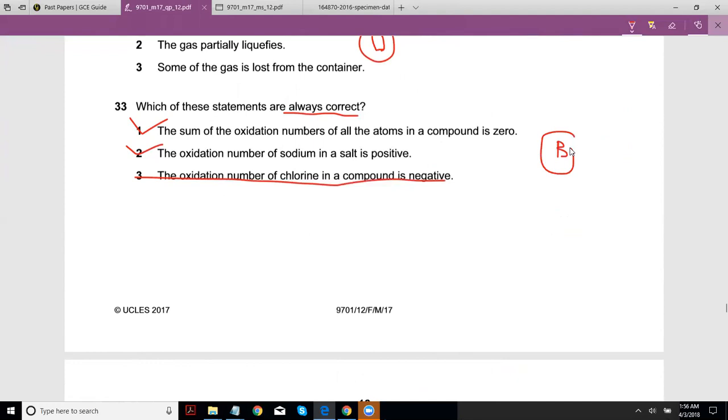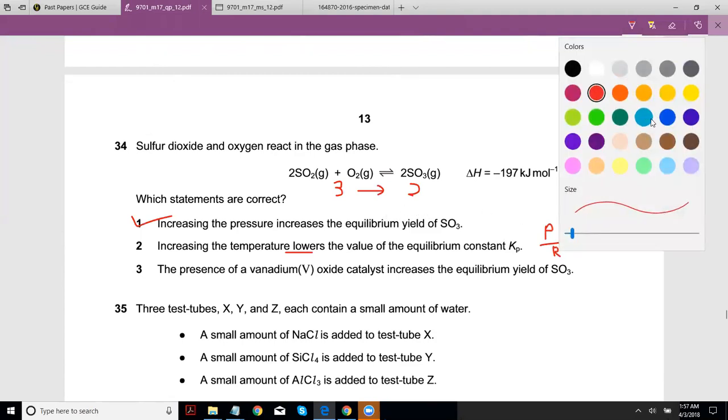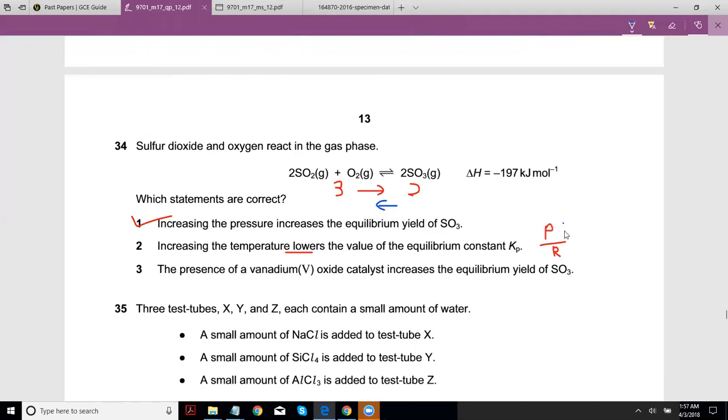So 33 is B. Sulfur dioxide and oxygen react in the gas phase - which statements are correct? Increasing the pressure increases the equilibrium yield of SO3. You have to look at the number of gaseous moles - three here and two here. If you increase the pressure, it will move towards the one with less moles, so yes, it does increase the yield of SO3. Increasing the temperature lowers the value of the equilibrium constant Kp. Kp is basically product over reactants. If it lowers the value, it means the equilibrium is moving towards the left because product value comes down.